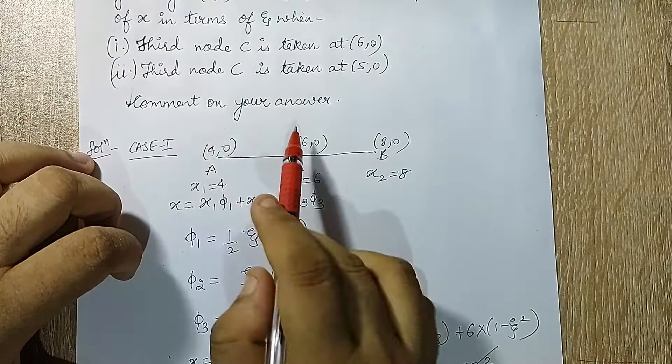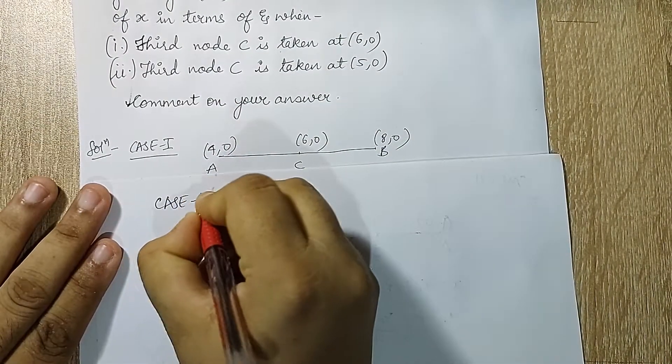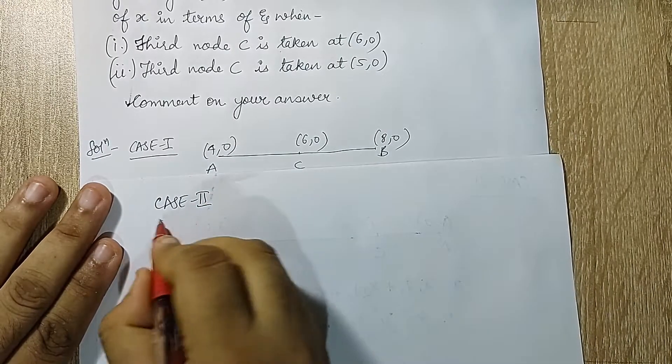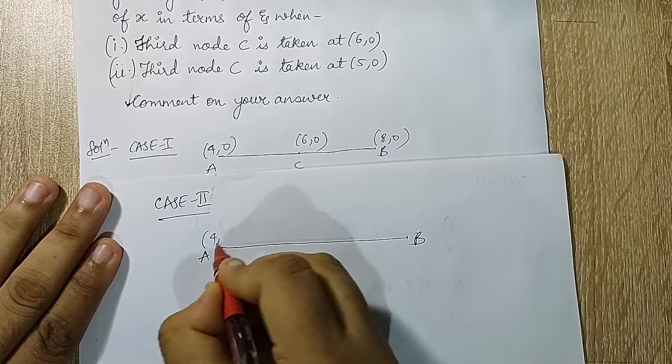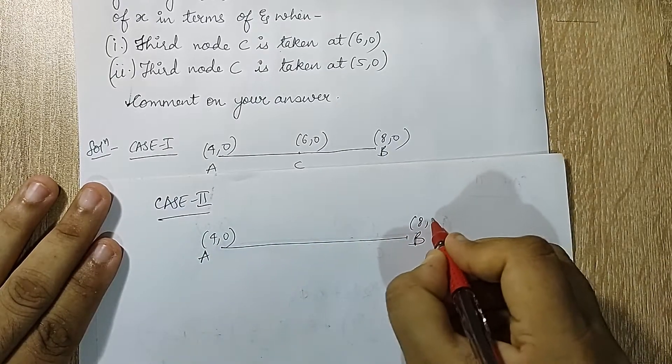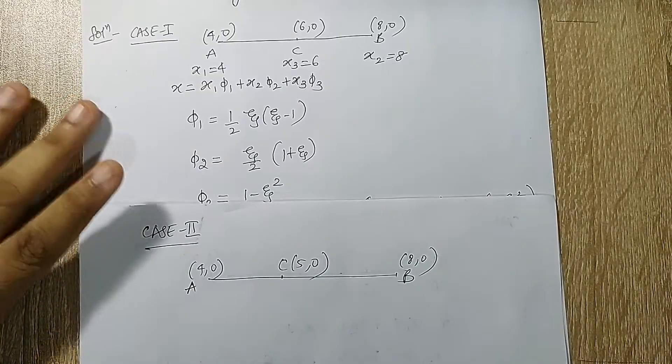Next we will go to case 2 where my C will have coordinate (5,0). So let me write down case 2. I'll draw the same diagram.